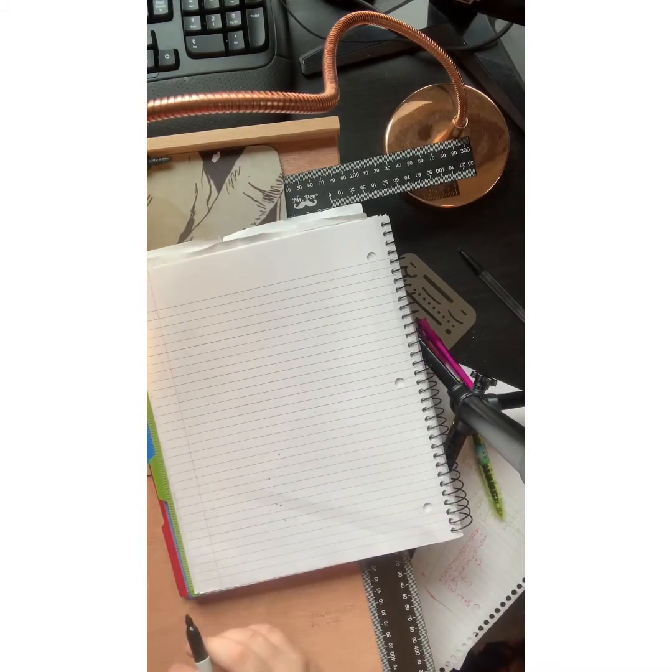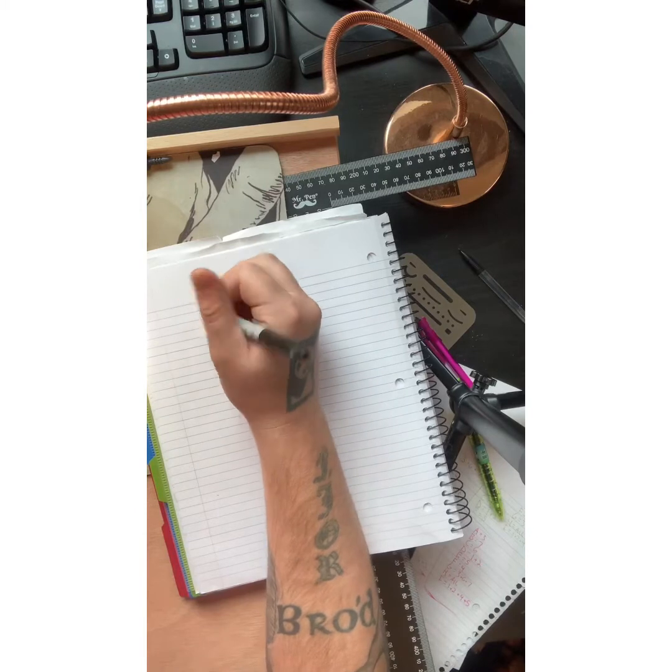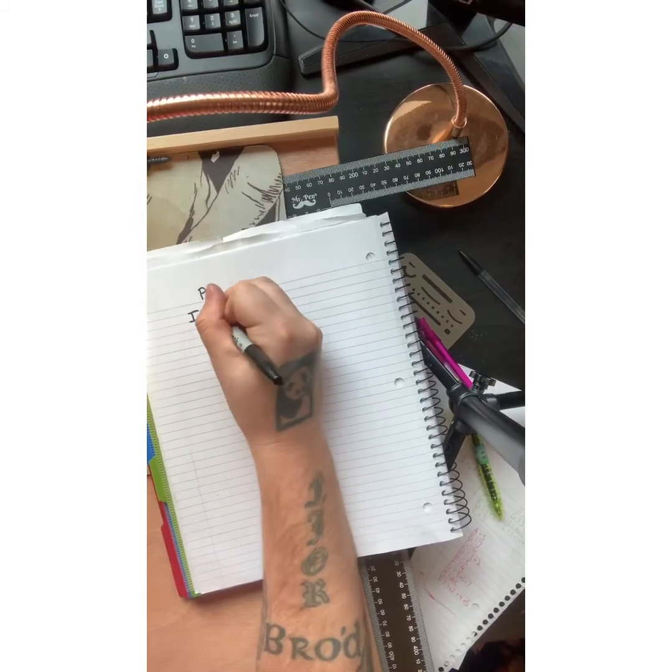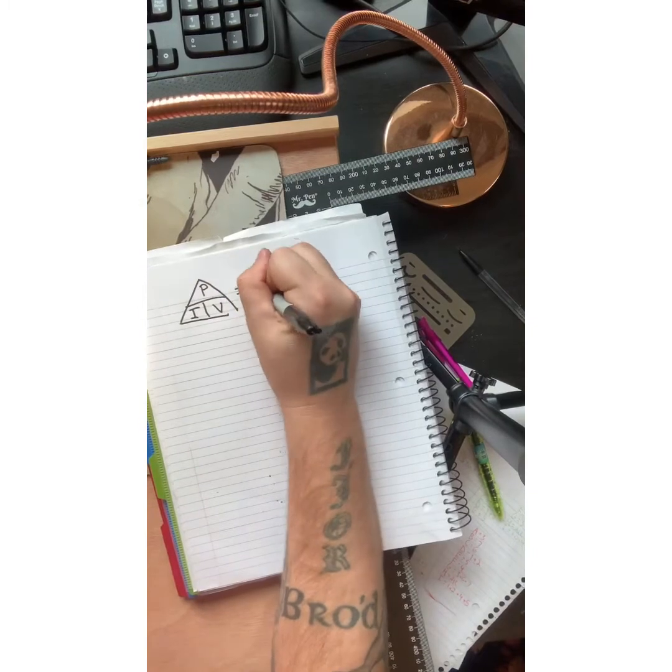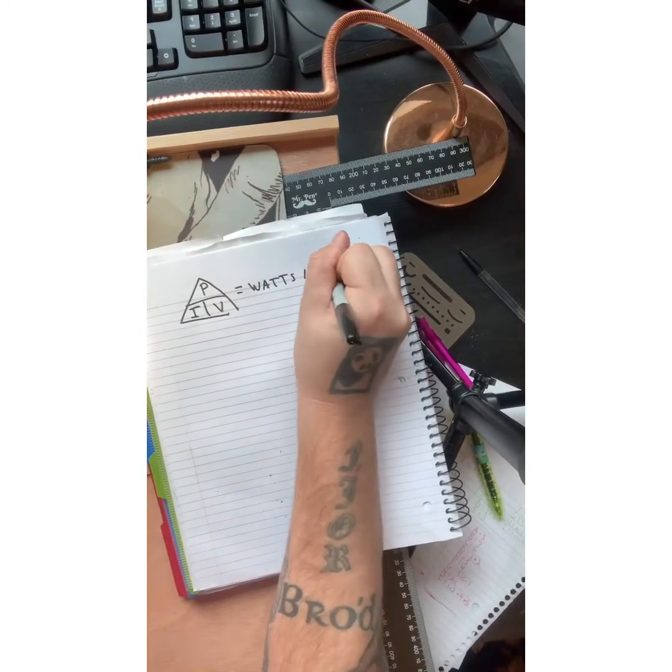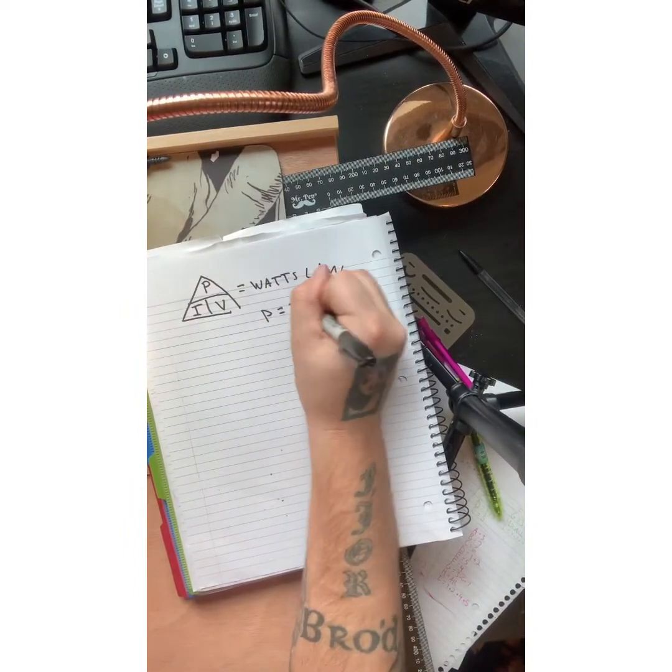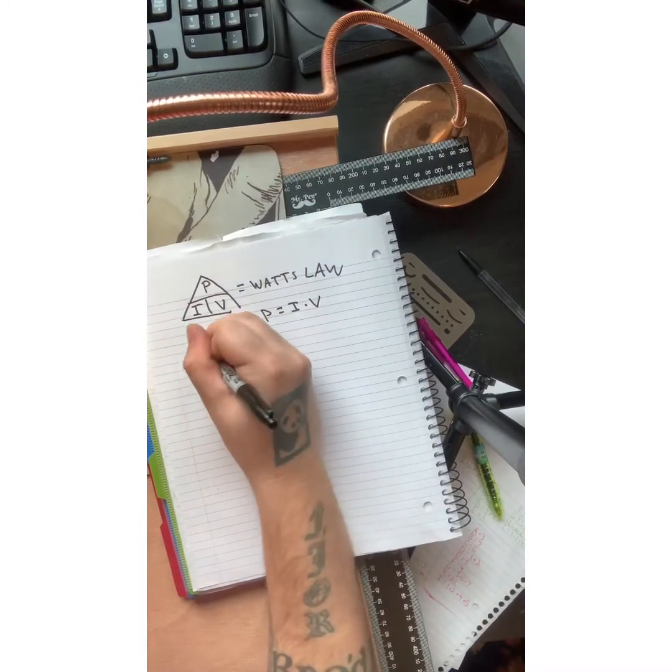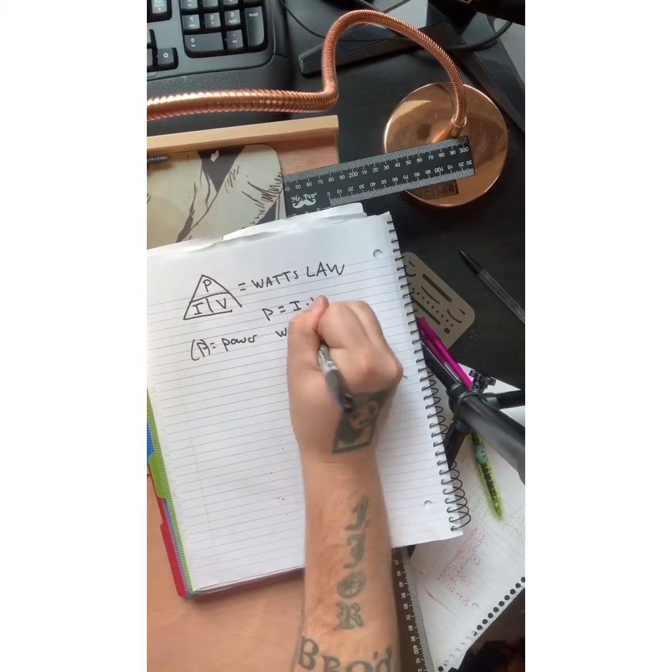All right, this is going to be the easiest way to remember Watt's Law, which is very similar to Ohm's Law. If you remember, I showed you that little power triangle, and this is going to be essentially the same thing, except this is Watt's Law. Another way to look at that is P equals I times V, whereas P is your power, also known as Watts.